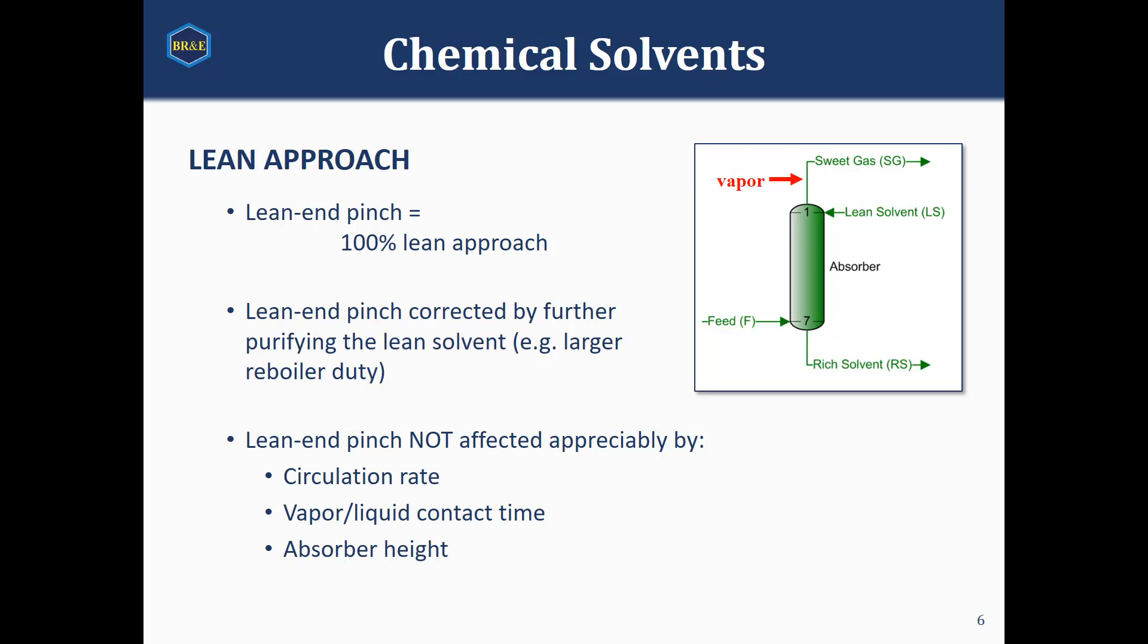If it is an issue, then the way to get around this issue is going to be to purify our lean solvent further. And so as noted here, increasing our circulation rate is not going to help our situation because it's not about having enough amine. It's about whether that amine is clean enough to get our sweet gas down to the levels we need it to be. And so increasing circulation rate, contactor time, absorber height, etc. is not going to help. We're going to need to focus on improving regeneration.